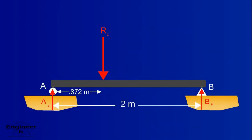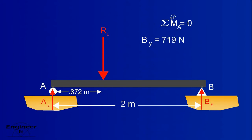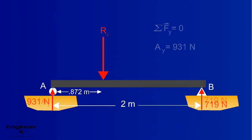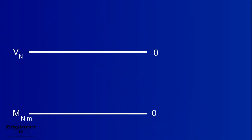Now we can finally find the reactions at the supports. That concludes the reactions part of the problem. Before beginning the diagrams, remember that we always use the distributed force, not the resultant. Always put units on any number you're referencing in your diagrams.